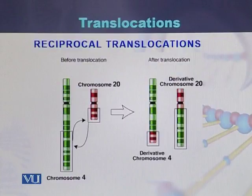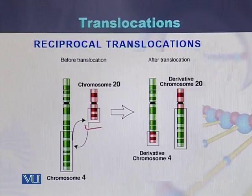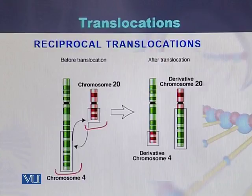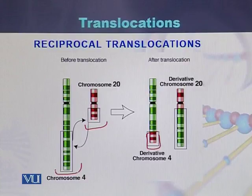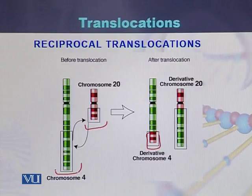Looking at reciprocal translocation before and after: when there is no translocation, we can see chromosome 20 and chromosome 4. After reciprocal translocation, the fragment of chromosome 20 will attach to chromosome 4, and the part of chromosome 4 will attach to chromosome 20 — so this is vice versa. When chromosome 4 and chromosome 20 exchange DNA fragments, such a translocation is called reciprocal translocation.